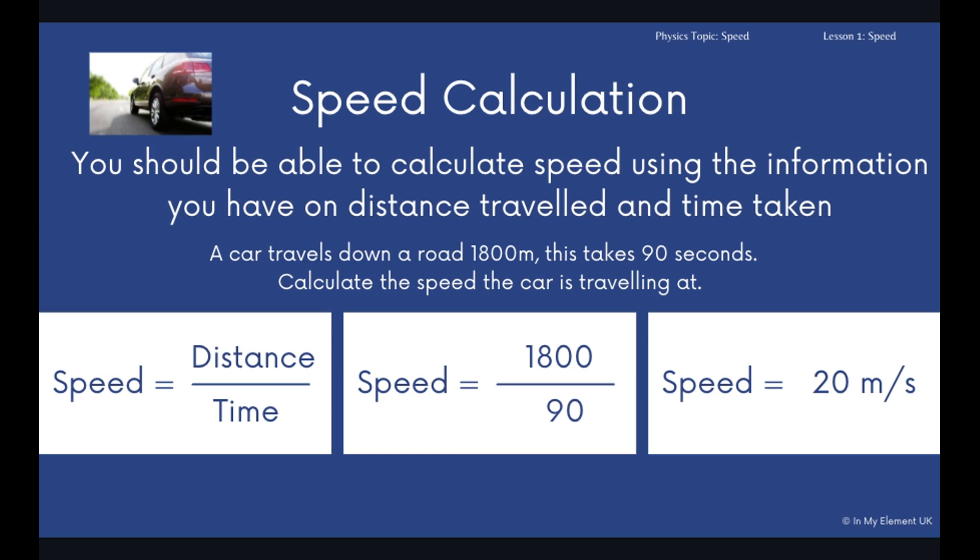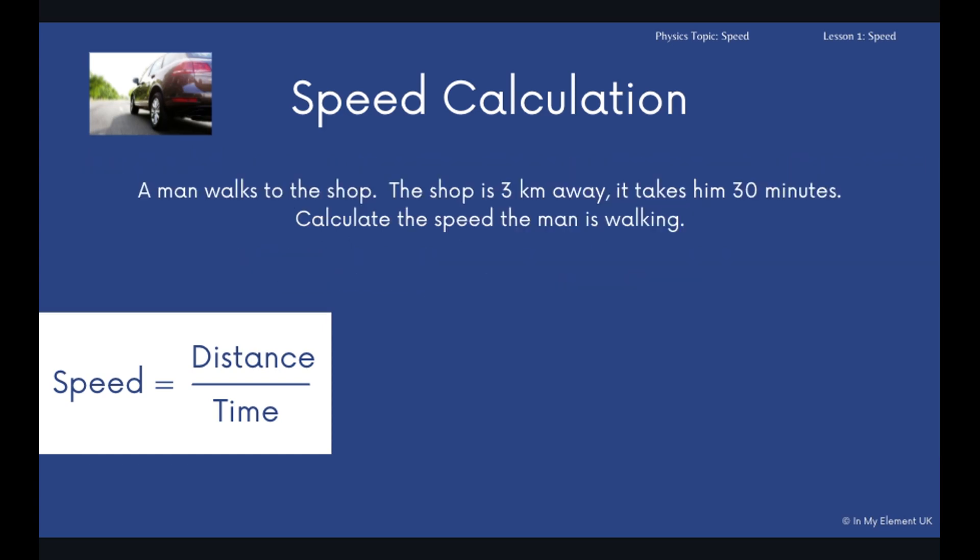Another example: a man walks to the shop. The shop is 3 kilometers away and it takes him 30 minutes. Calculate the speed the man is walking. Now pay attention here. When we talked earlier, we talked about kilometers per hour. It's not in hours, it's in minutes, so you've got to convert those minutes to hours.